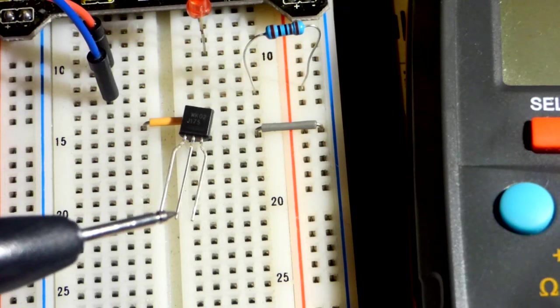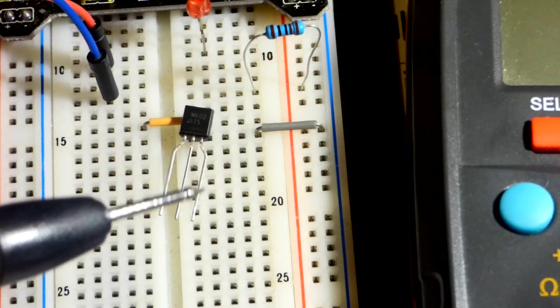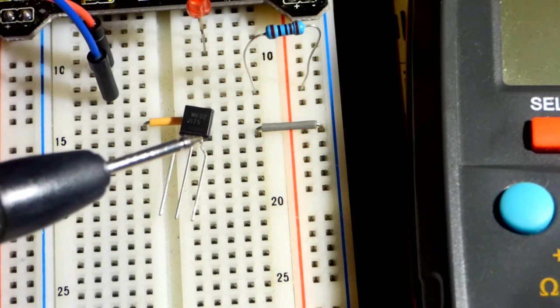The middle pin, pin number two, is the gate. And then pin number three, the one on the right there, is the source.